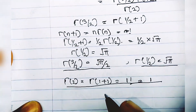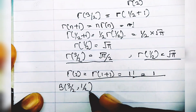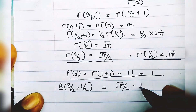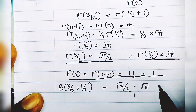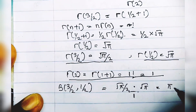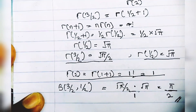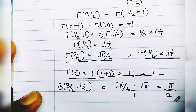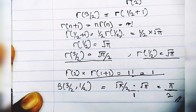Substituting everything: Γ(3/2) · Γ(1/2) / Γ(2) = (√π/2) · √π / 1. We know that (√π/2) · √π = π/2. So the solution to Beta(3/2, 1/2) = π/2. Pretty easy! With this you can solve other problems on the gamma function of fractions. Thank you for watching — see you on the next video.